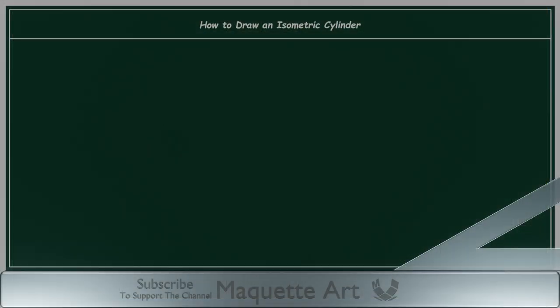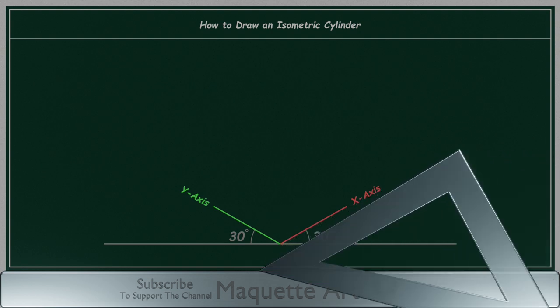In the previous video, we learned that in the isometric view, the X and Y axis are drawn at 30 degree angle to the horizontal. And you will use the T-square and the 30 degree triangle to draw them.